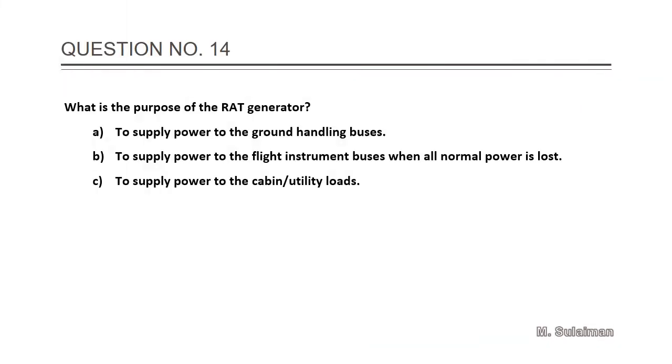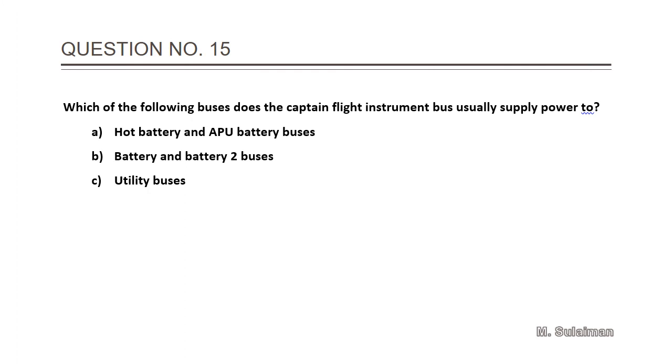Number 13: Which backup generator components contain the primary power sources for the FCDC PSAs? Answer is A: PMGs. Question number 14: What is the purpose of the rear generator? Answer is B: supply power to the flight instrument buses when all normal power is lost. Number 15: Which of the following buses does the captain's flight instrument bus usually supply power to?